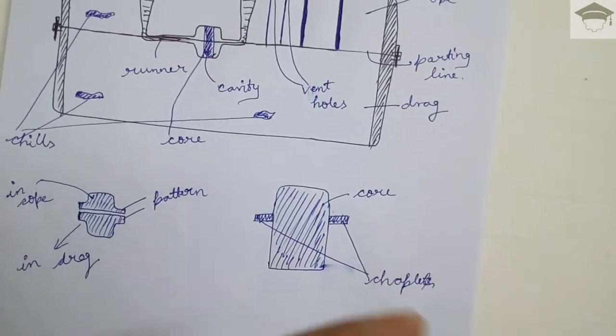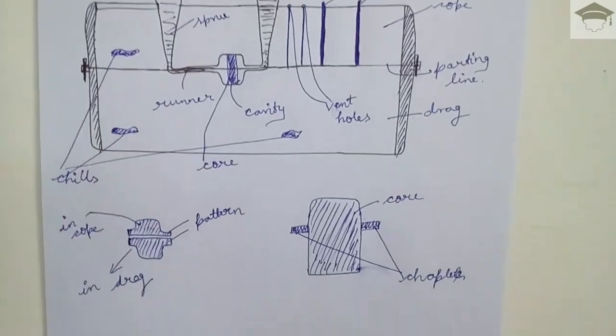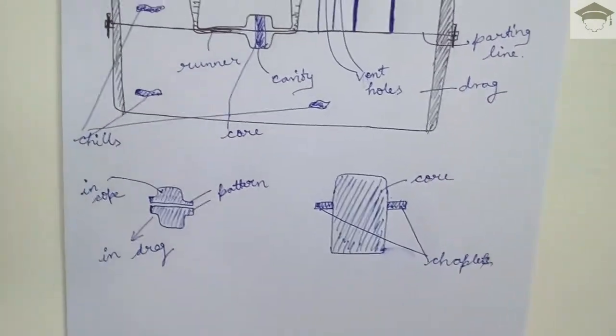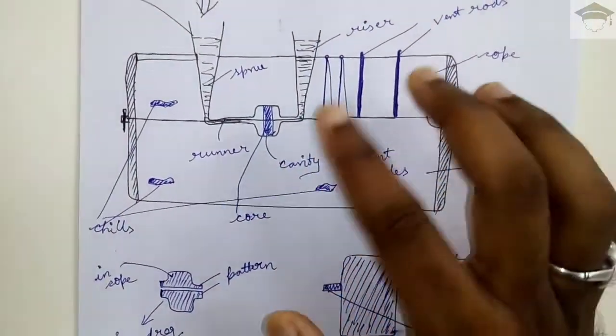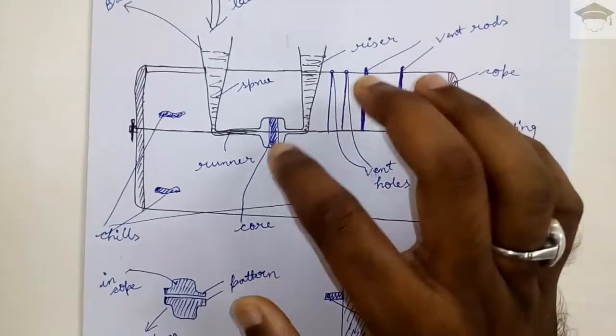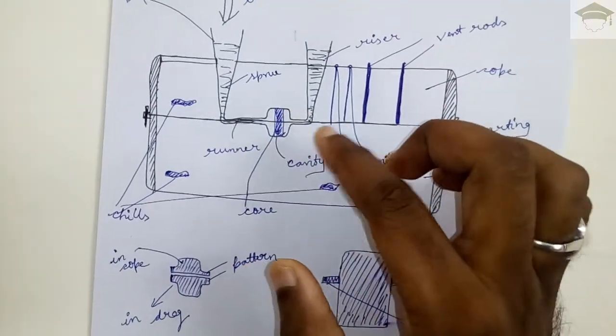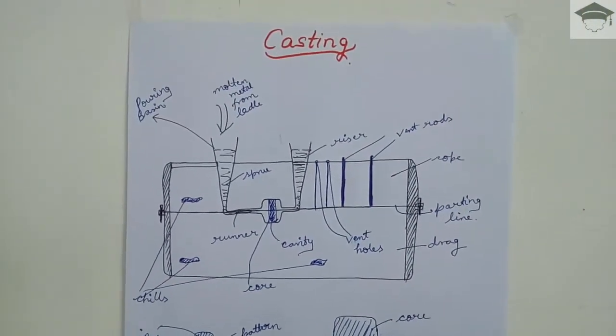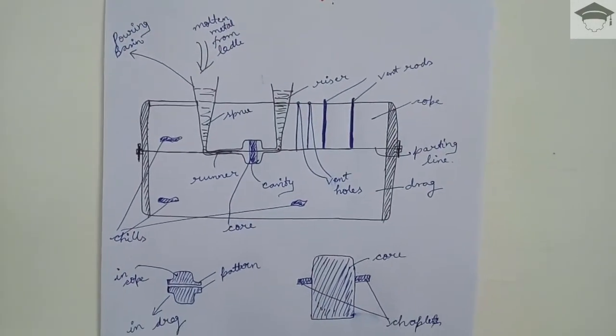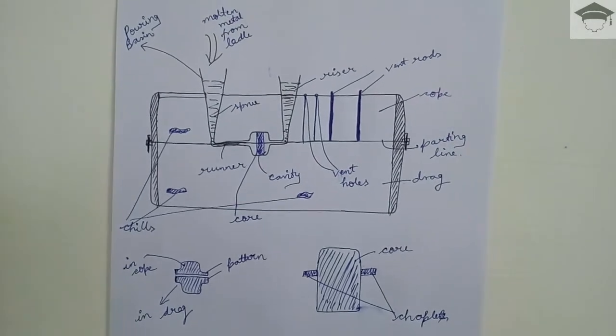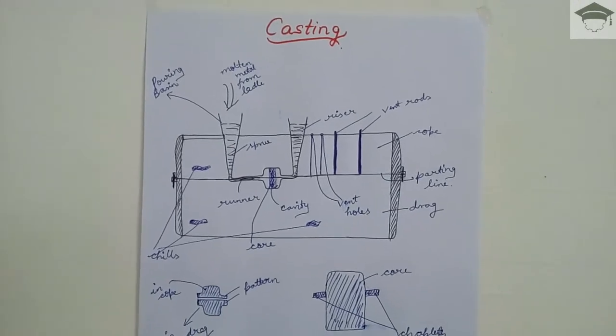So I hope you have understood how casting is done. And once the pattern is solidified then this mold is broken and then this solidified component is taken out then further finished to obtain the required final component. I hope you have understood what is casting and what are the various terms related to casting. If you have found this video helpful please share this video, please press the like button and do not forget to subscribe. Till next time, take care, bye bye.